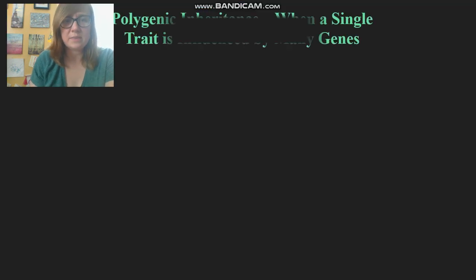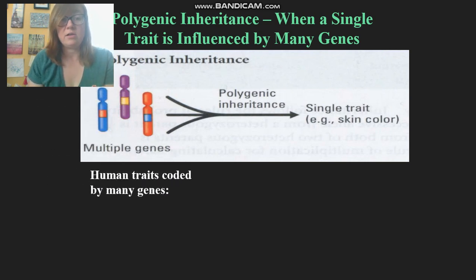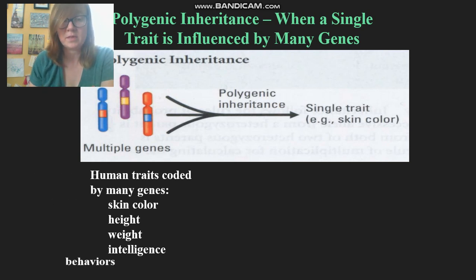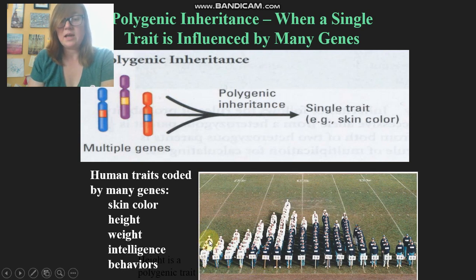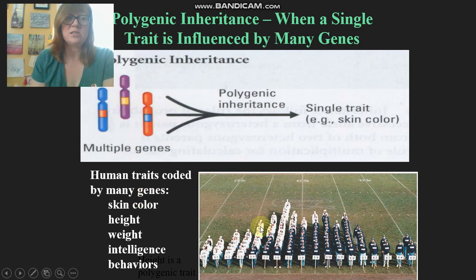Polygenic inheritance is where one trait is influenced by many genes. Examples include your skin color, eye color, hair color, and height. Intelligence and behavior are also on the list, though many factors affect what we consider intelligence. These people lined up by height illustrate a bell curve — not many very short people, not many very tall people, most are somewhere in the middle. That's because many genes influence height, so middle values are most likely. You see this bell curve shape for test scores and many other things.